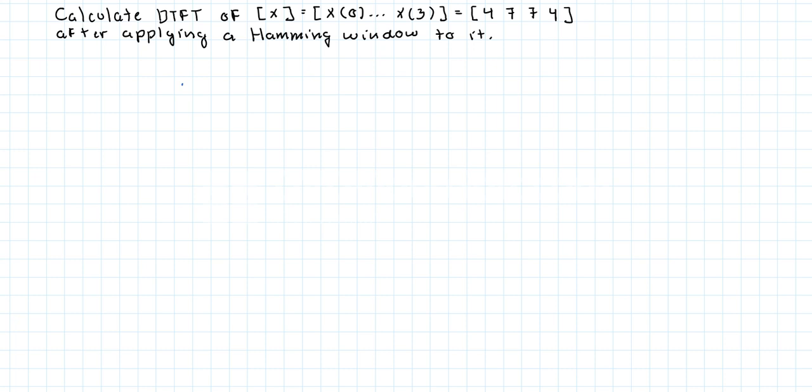So I'll write this out here, the window function is equal to 0.54 minus 0.46 cosine of 2πn divided by m minus 1, where m equals 4.